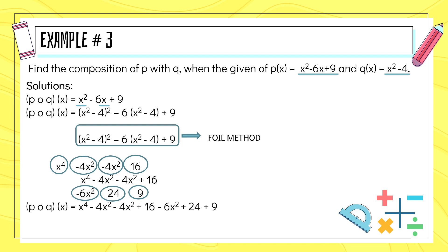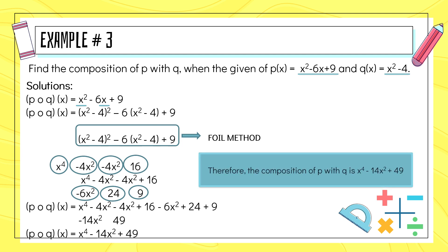We now proceed to combining like terms. Negative 4x squared minus 4x squared minus 6x squared equals negative 14x squared. Then combine 16, 24, and 9, which equals 49. So our answer is x to the power of 4 minus 14x squared plus 49. Therefore, the composition of p with q is x to the power of 4 minus 14x squared plus 49.